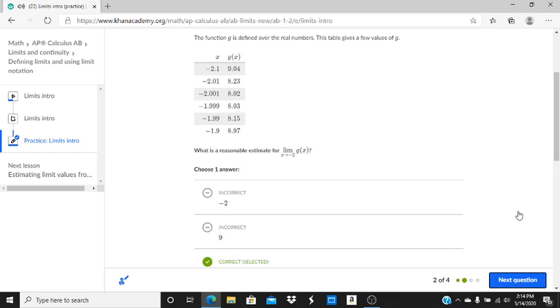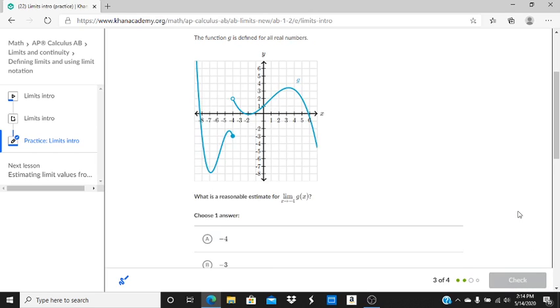Let's go on to another one. Alright, the function g is defined for all real numbers. What is a reasonable estimate for the limit as x approaches negative 4 of g of x? Well, if we take a look from the left-hand side, we'll see that we're approaching negative 3 as the left-hand limit is approaching negative 3.